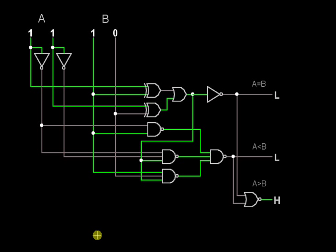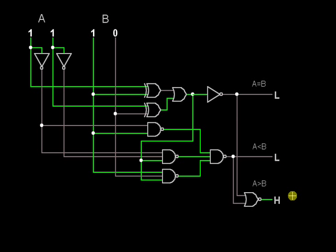In this session we are going to learn about a 2-bit comparator. This is the circuitry for a 2-bit comparator, where A and B are 2-bit digits. If A is greater than B, that output will be high. If A is less than B, that output will be high. If A equals B, that output will be high.